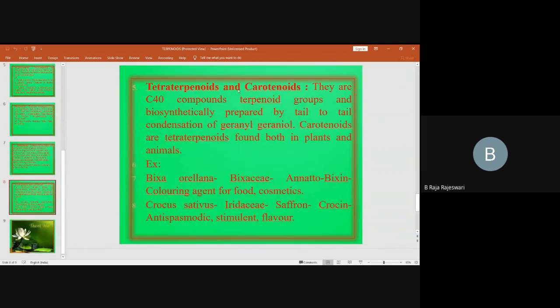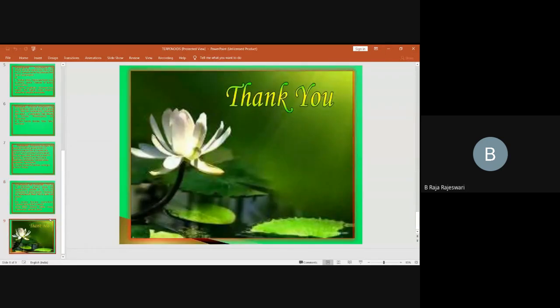Tetraterpenoids and carotenoids. They are C40 compounds, terpenoid groups, and biosynthetically prepared by tail-to-tail condensation of geranylgeranyl. Carotenoids are tetraterpenoids found both in plants and animals. Example: Bixa orellana, Bixaceae, annatto, bixin, coloring agent for food, cosmetics; Crocus sativus, Iridaceae, saffron, crocin, antispasmodic, stimulant, flavor. This is about the tetraterpenoids.